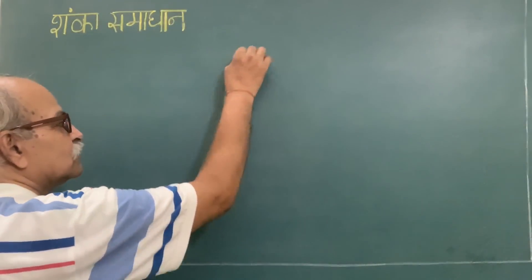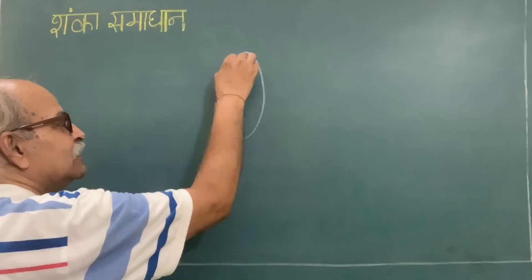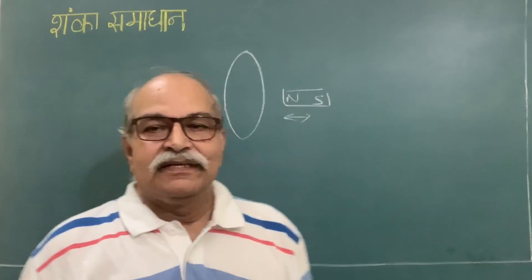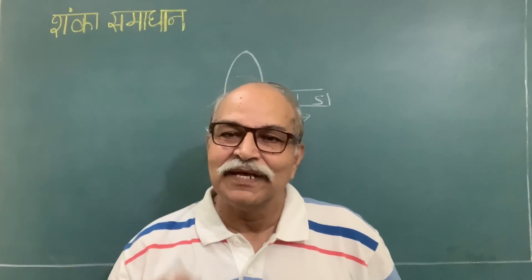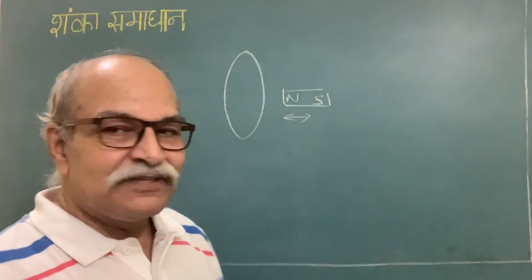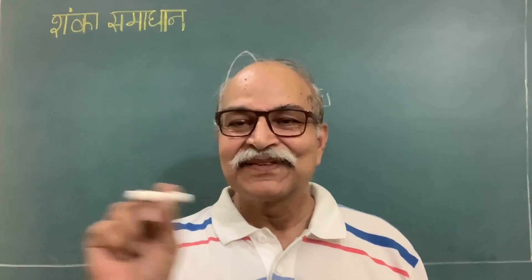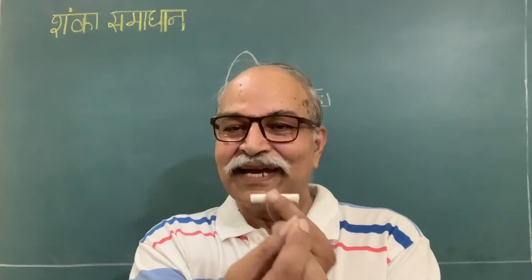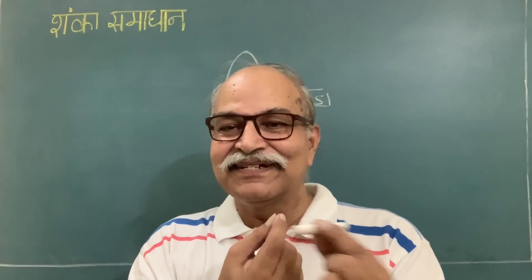So basically you have to understand several things. Suppose you have this superconducting ring and then you have a magnet and that magnet is moved. The first thing you must understand is that when a magnet moves, the magnetic field due to the magnet changes as a function of time at any point in space. So if I have this magnet and I move it, I am changing the magnetic field here, here, here, and so on.